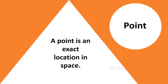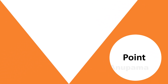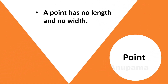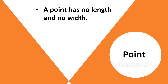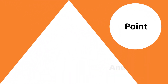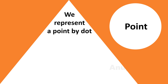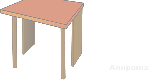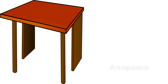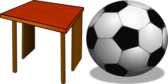Therefore we can say a point is an exact location in space. A point has no length and no width. We represent a point by a dot and denote it by a capital letter, reading it as 'point A'. Have you seen the surface of a table and the surface of a football?